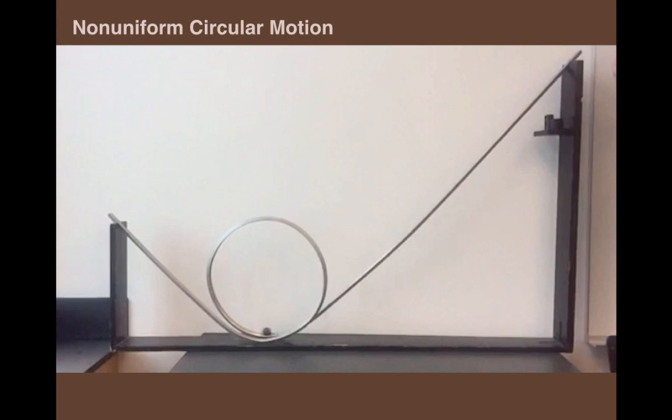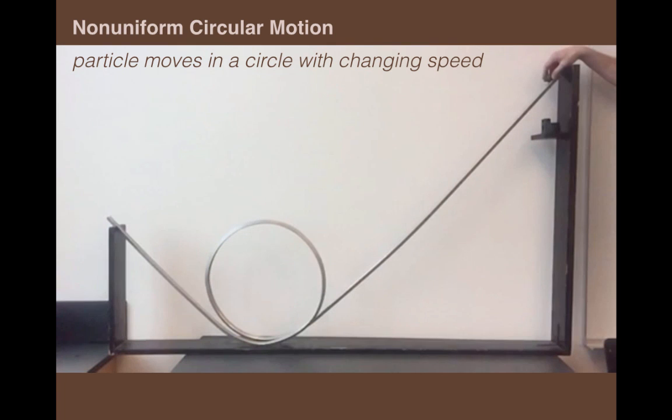This video is about non-uniform circular motion, in which a particle moves in a circle with changing speed, like this ball on a ramp.